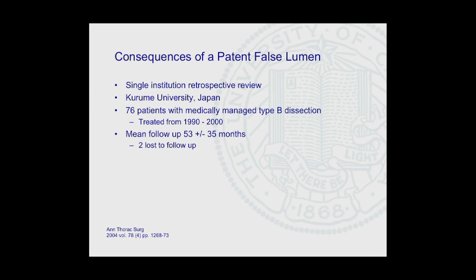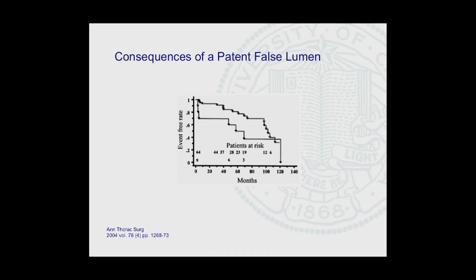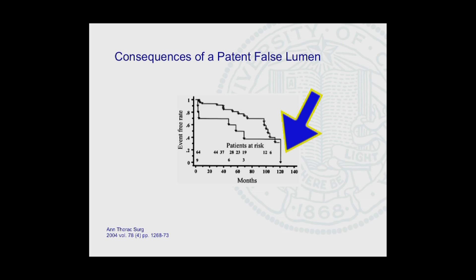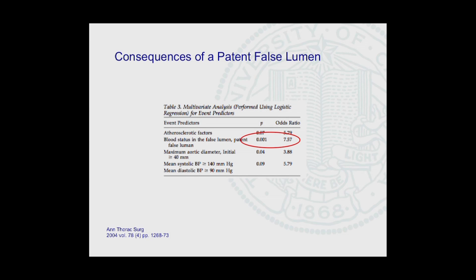These results were mirrored by another group in Japan. Their cohort was somewhat smaller — only 76 patients — limited to 10 years of data and followed for 53 months on average, with only two patients lost to follow-up. Their Kaplan-Meier curves for event-free rate — defined as freedom from aortic dilation to greater than 6 centimeters and death — showed a very similar pattern. This held up on multivariate analysis with a similar odds ratio of 7.5.